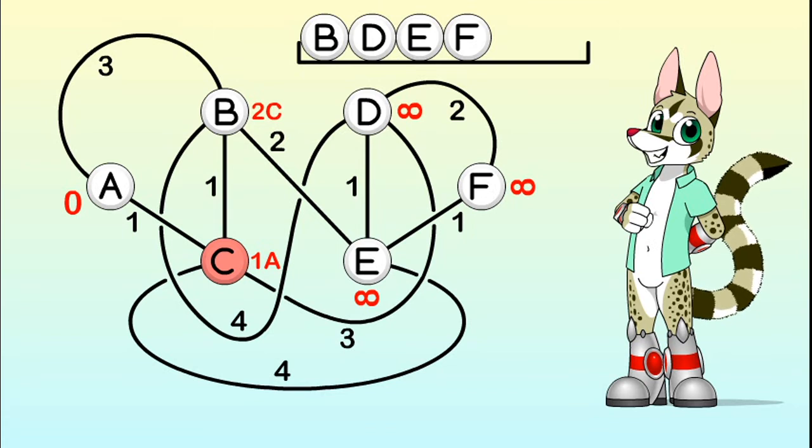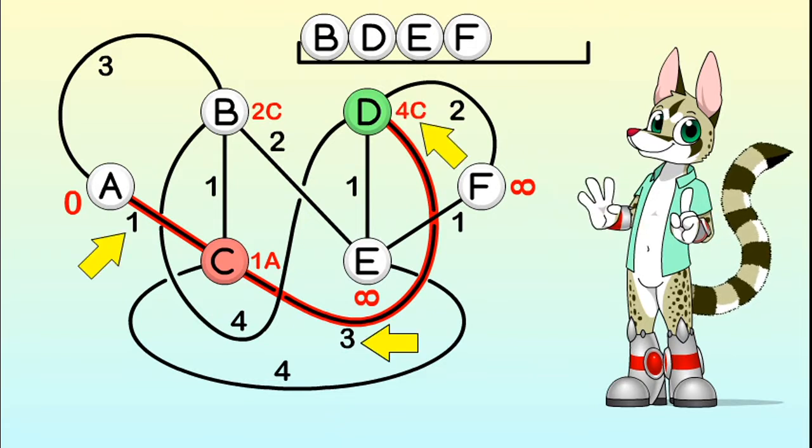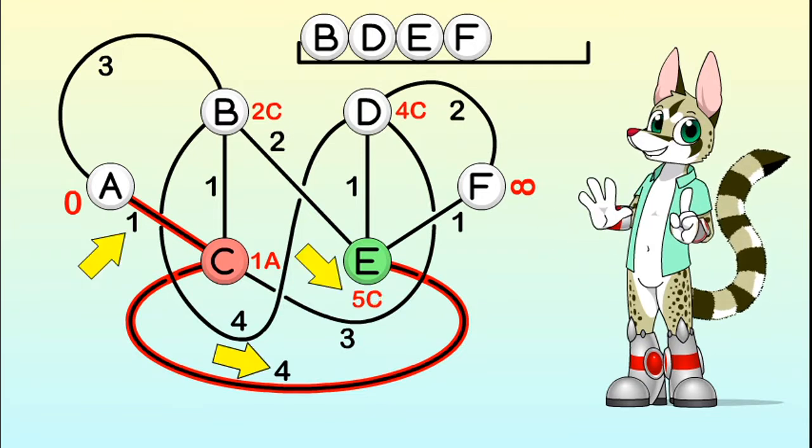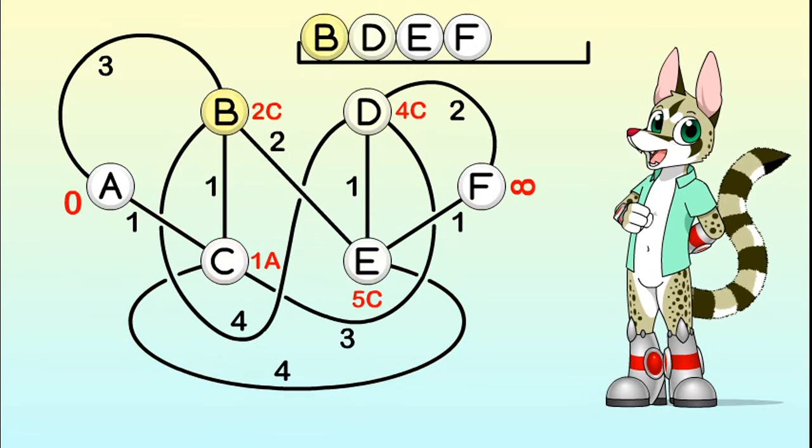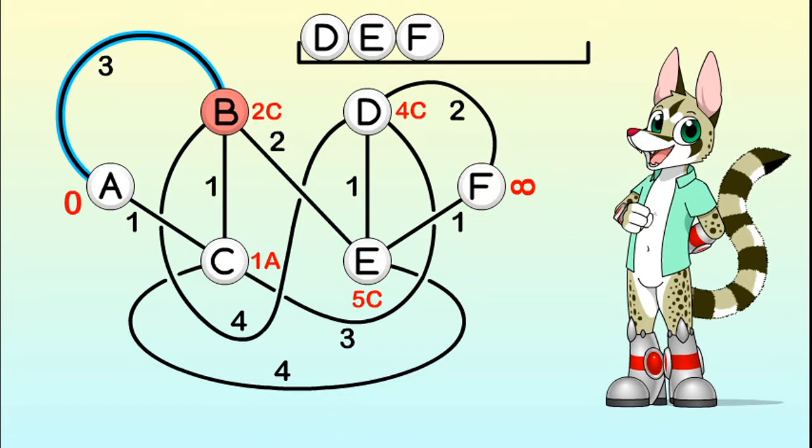We must also update every other vertex that can be reached from C. Going from A to D through C will produce a 1 plus 3, 4 units long route. And going from A to E through C will produce a 1 plus 4, 5 units long route. Now the vertex with the shortest distance from A is B, from which we can reach vertices D and E. Of course, we don't need to check the edges from B to A and from B to C, because those have already been fully visited.